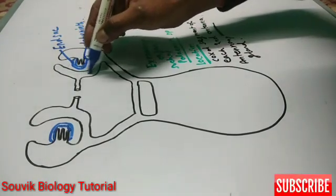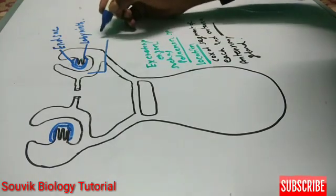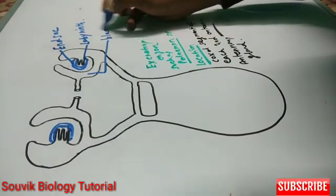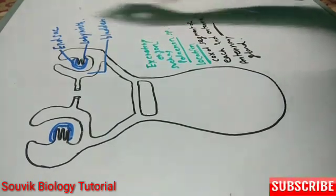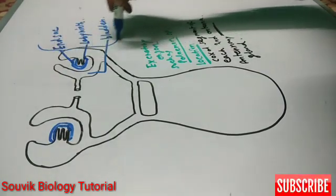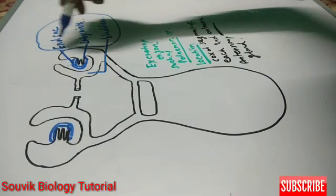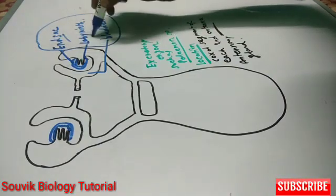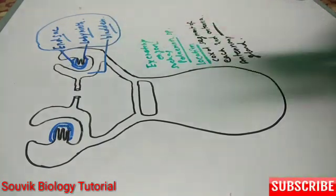And this is bladder. The green gland consists of these three parts: one end sac, second labyrinth and third one is bladder.